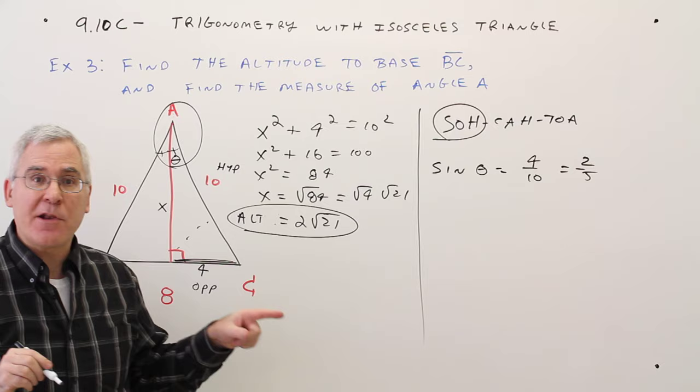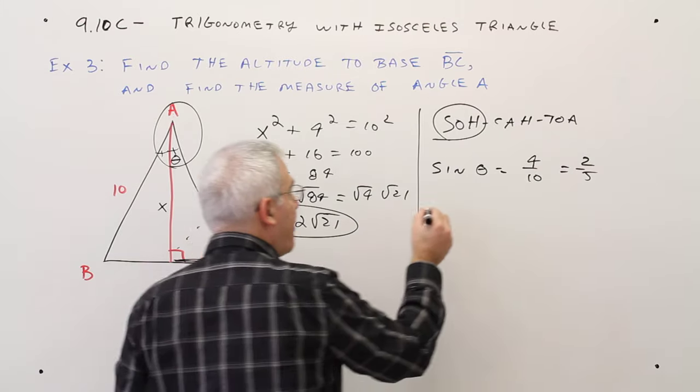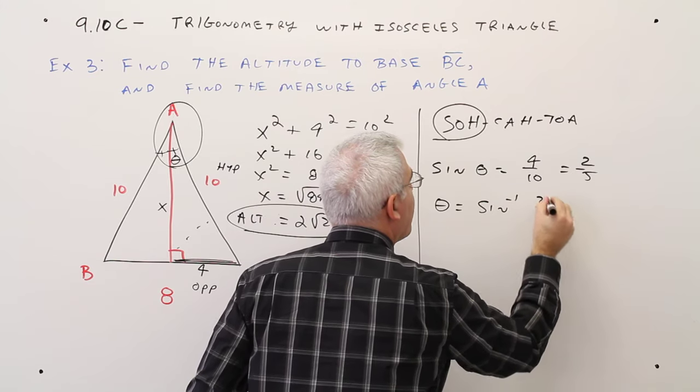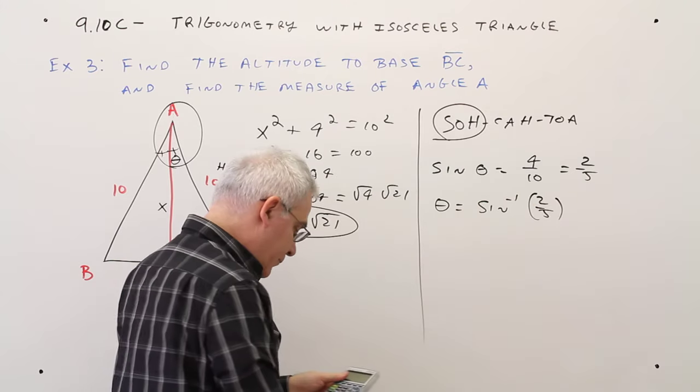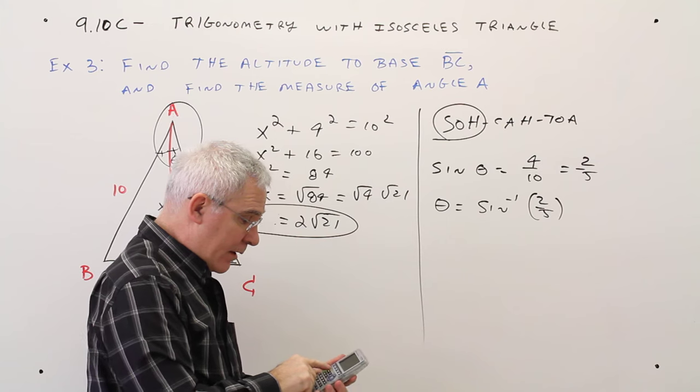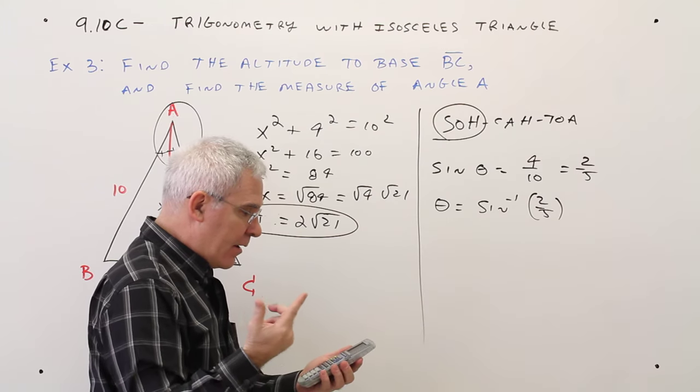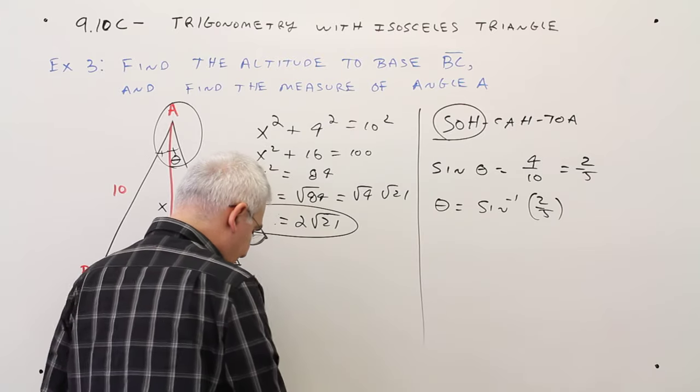And then what undoes sine? Inverse sine. So theta will be sine inverse of 2 over 5. I'll just plug that in my calculator. Second sine inverse 2 divided by 5. 23.57 degrees.